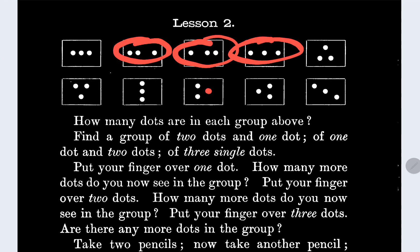I can't really mark these out because these are activity things. Put your finger over two dots. Okay, let me do these two here. There, I put my finger over those two dots. How many more dots do you now see in the group? There would be only one dot. Well, maybe I can write these out. Let me write these in my book.